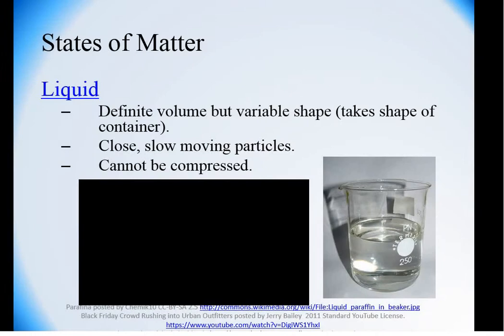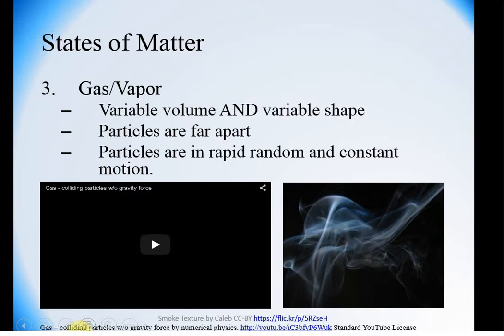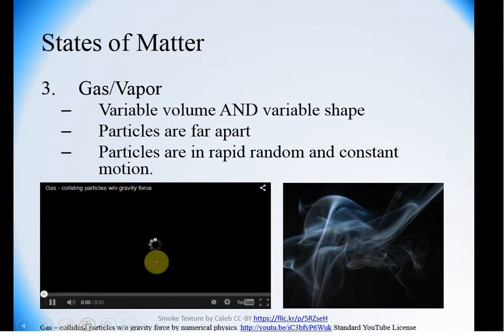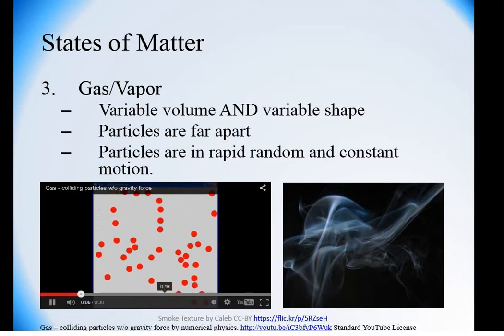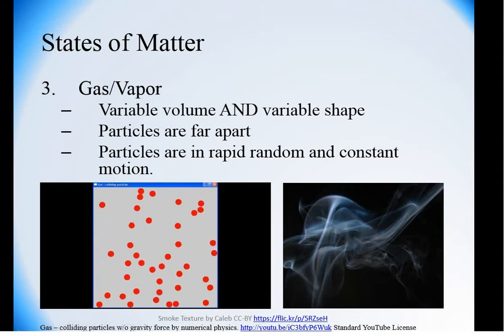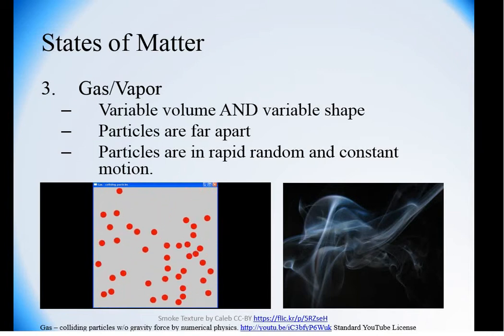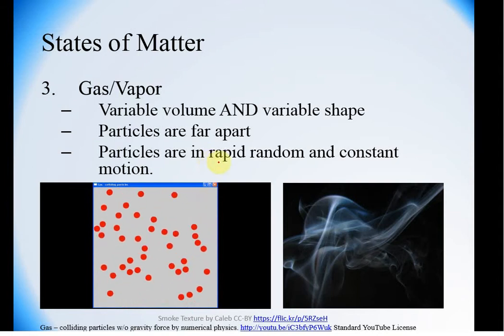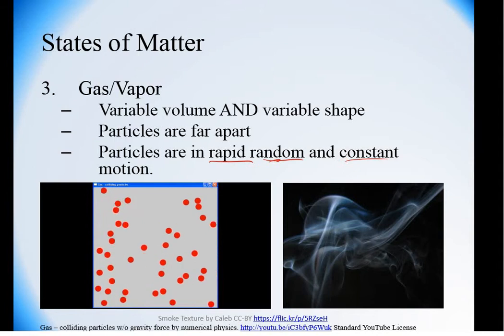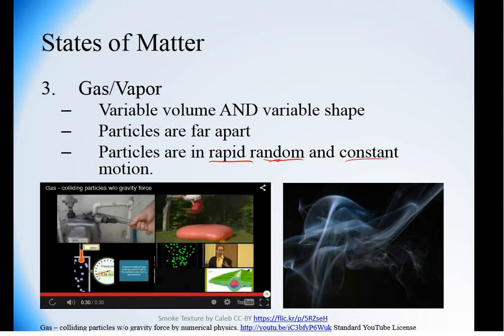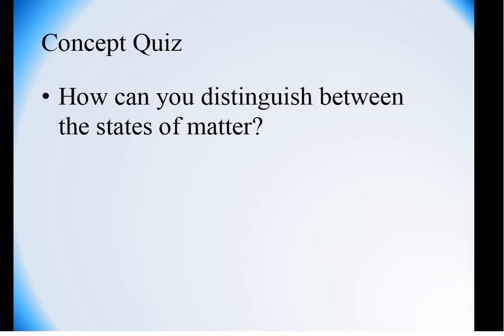A gas is the last state. Here we have a variable volume and a variable shape. That is because these particles are very, very far apart. And so when you have these particles far apart, they could be easily compressed to take up less or expanded to take up more volume. They can also take up the shape of any container they're in. So they have a variable volume and shape. It's also important to note that these particles are in random and rapid as well as constant motion. It's like a bunch of kindergarteners on sugar or bouncy balls. They move very, very quickly and a constant rapid motion. So really think about how you can distinguish between states of matter. You may want to do it visually like in the sample questions or think about the definitions themselves.